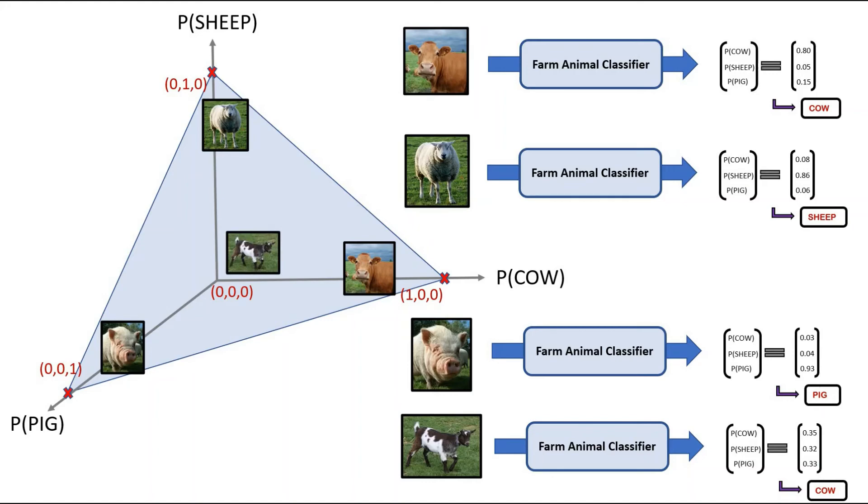It is clear visually that for input images where we are more confident about, they lie close to the vertices of the triangle, while more uncertain images tend to lie closer to the center of the triangle, which is equidistant from the three classes. Now let's just focus on one image of the cow to see if we can understand data and model uncertainty better.